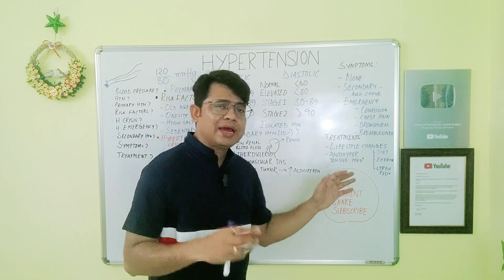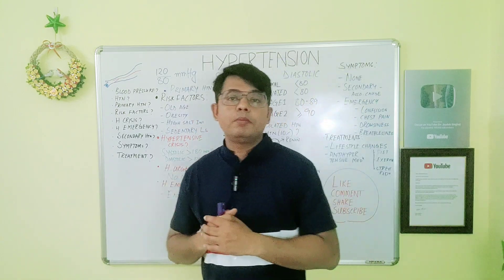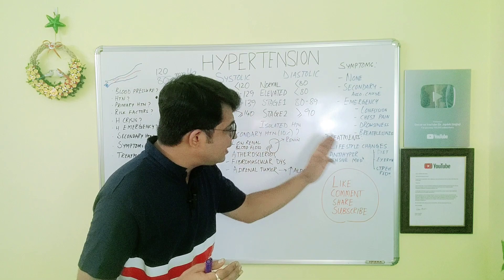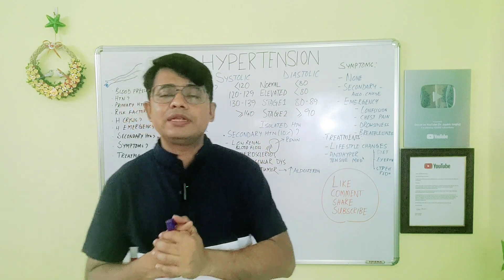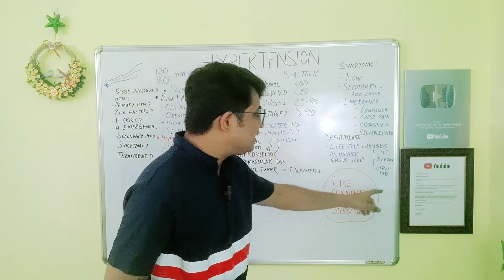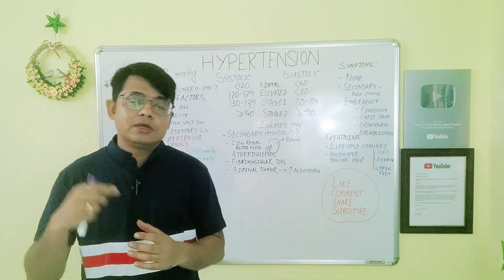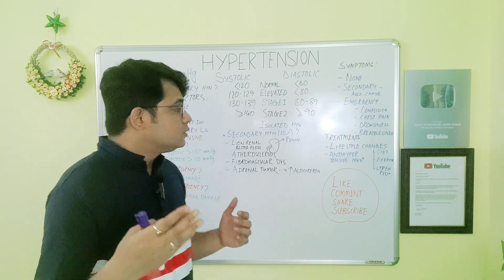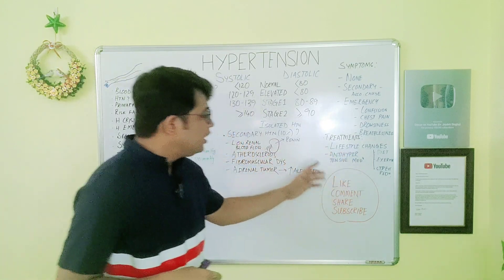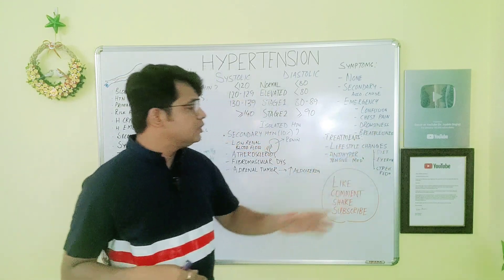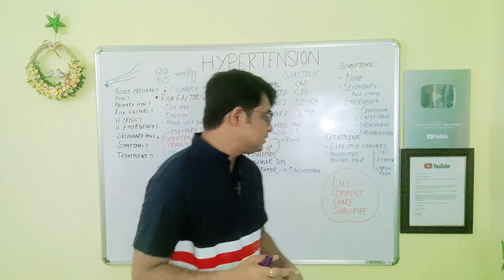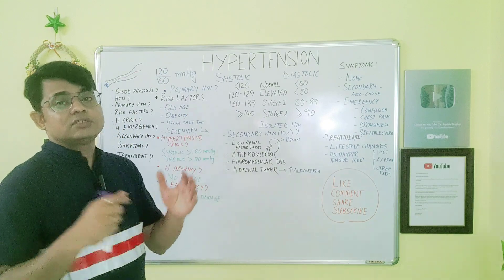Regarding treatment, a separate vlog on treatment options is needed, but in short there are lifestyle changes and anti-hypertensive medications. In lifestyle changes, we can modify our diet, exercise, and enroll in stress reduction programs, which can help in reducing hypertension. If blood pressure is not controlled with lifestyle changes, we can move to anti-hypertensive medications.